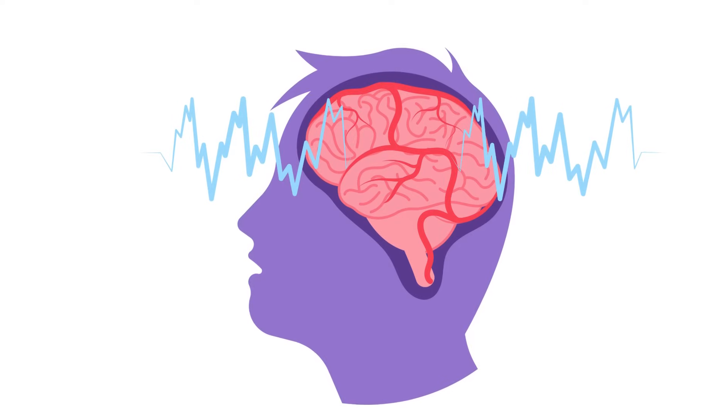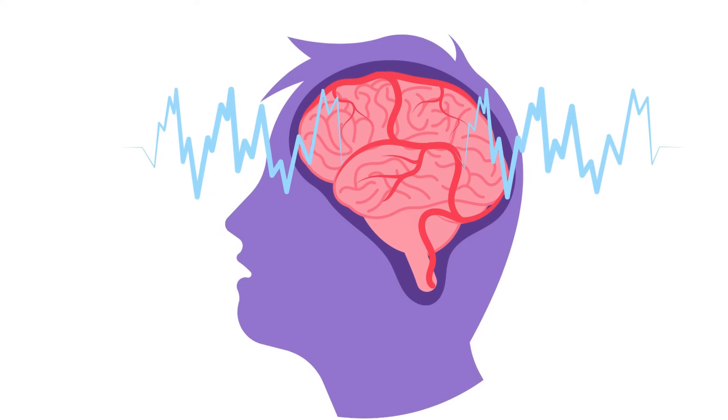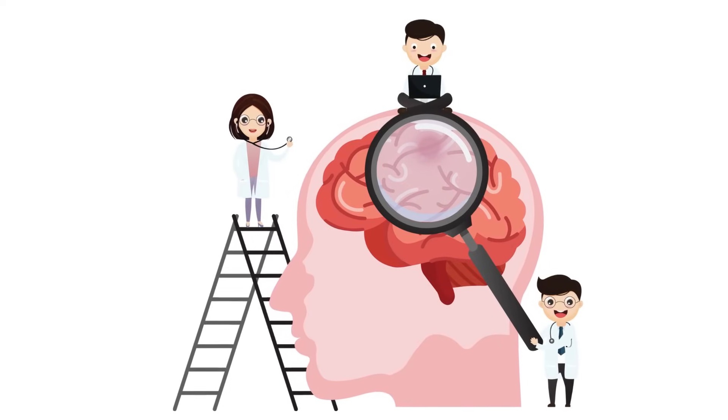But do you control these firings? Can you will a specific neuron to fire or not fire? Of course not. Your brain operates based on its physical structure and the inputs it receives, following the laws of nature.